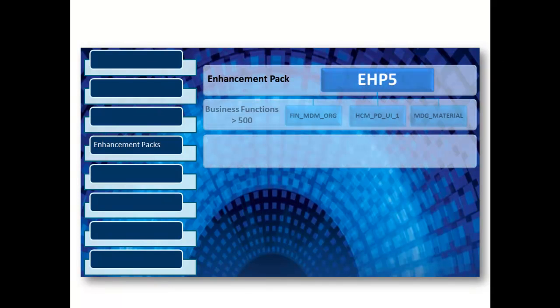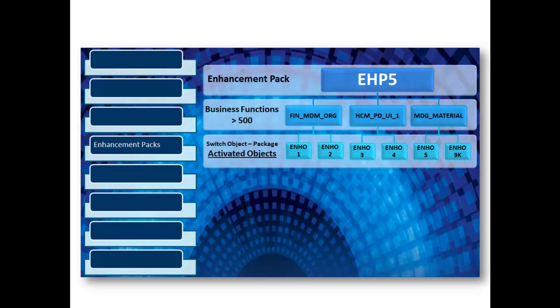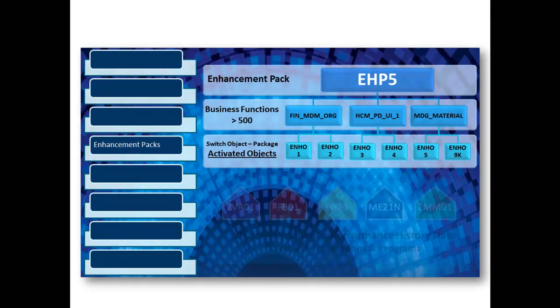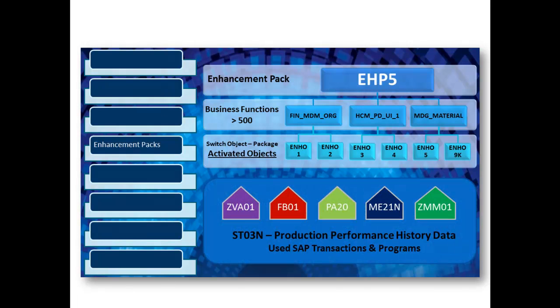In this webcast, we'll focus on Live Compare enhancement pack analysis deliverables. Think of enhancement packs as containers of business functions, and each pack is cumulative, which means enhancement pack 5 has over 500 business functions available. When activated, the objects within the switch framework packages come to life. So the question is, where should we focus our testing? Wouldn't it be nice to know our used transactions and programs that invoke these objects?